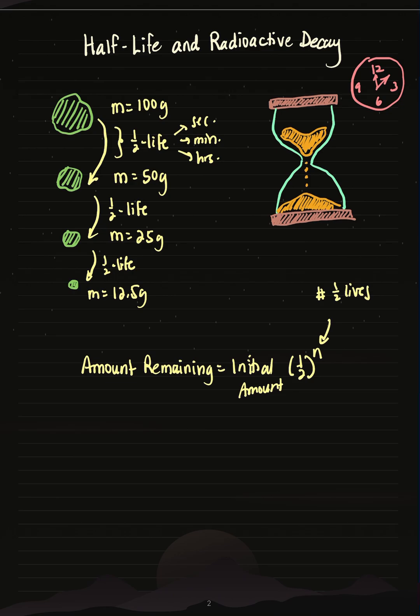So for example, in this question, the initial amount was 100 grams, and if you remember from my chart, three half-lives elapsed. So when you do this, the amount that remains after three half-lives for this substance is 12.5 grams.